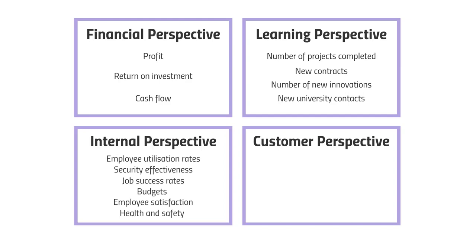The internal perspective is more about how efficiently you're doing your current operations. Examples include the effectiveness of security — a big risk mentioned in the pre-seen, covering both physical security and cyber security. Also looking at budgets, whether tasks are completed under budget, employee satisfaction, and health and safety record, which was also mentioned in the pre-seen. These are all important metrics for current operations.